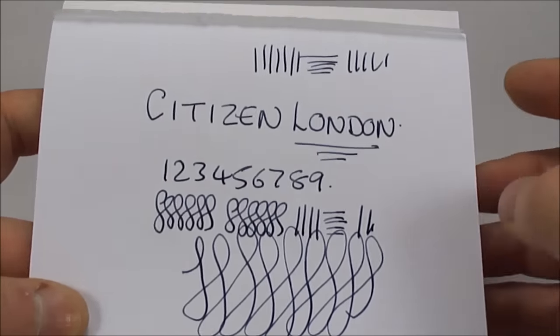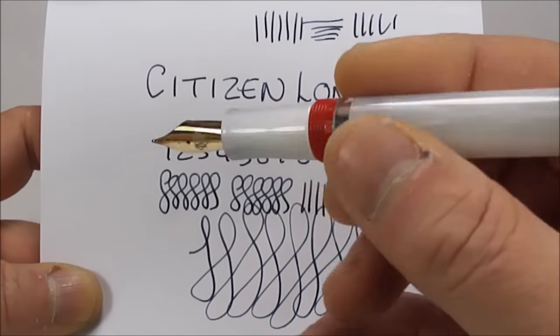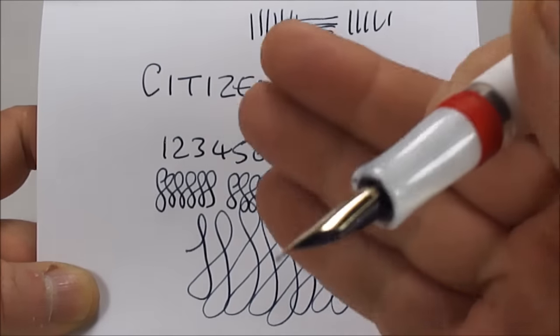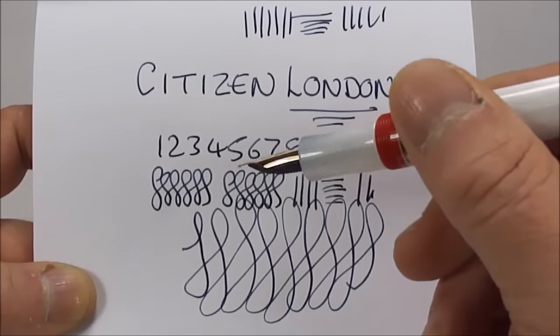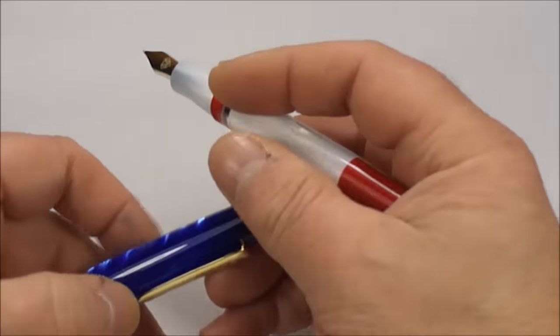So let's show you a writing sample. As you can see, writing with a medium line, lovely and smooth. So a lovely nib as you would expect from the Peter Bock company. So that's the writing sample there. So there we have it.